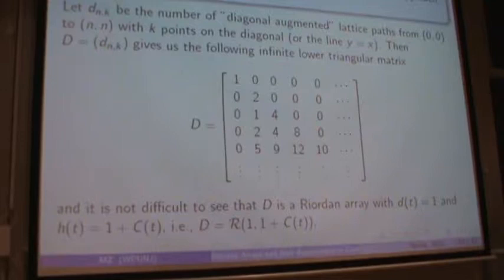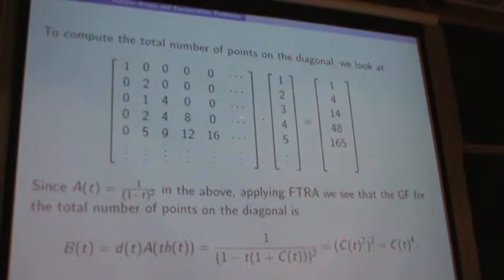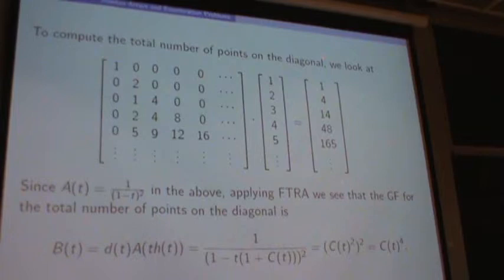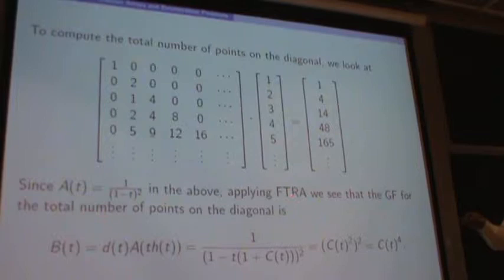We count one point along the diagonal, two points, three, four, and so on. This product gives the total number of points along the diagonal. Here A of T is one over one minus T squared — the generating function for the sequence one, two, three, and so on. Applying the fundamental theorem of Riordan arrays, we see that B of T, the total number of points along the diagonal, has generating function C of T to the power of four.